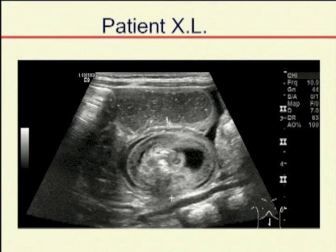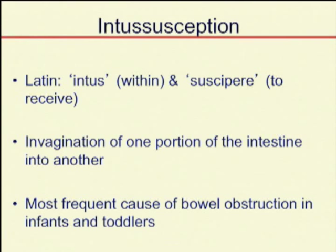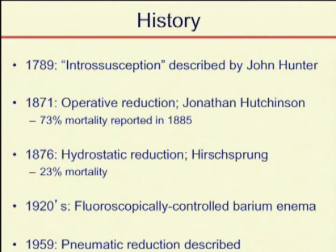We'll come back to that case and see how that child did, but intussusception is very simply an invagination of one portion of the intestine into the other. This is the most frequent cause of bowel obstruction in infants and toddlers. It was first described by the surgeon John Hunter in 1789, and the treatment of this disease has evolved over time.